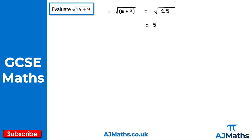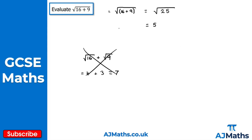A very common mistake here is to try and split this up as the square root of 16 plus the square root of 9. The square root of 16 is 4, and the square root of 9 is 3, giving 7 — which is not correct. So don't do this. Anything inside the square root, use BIDMAS, put it in a bracket, and simplify first.